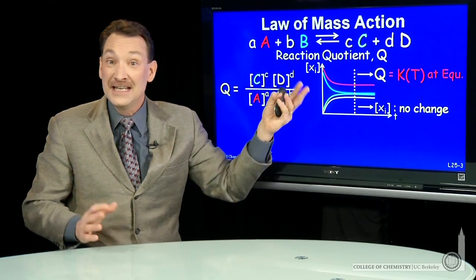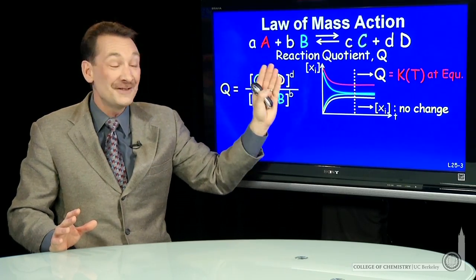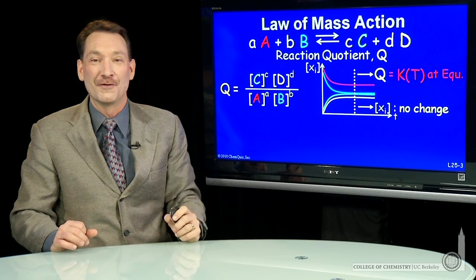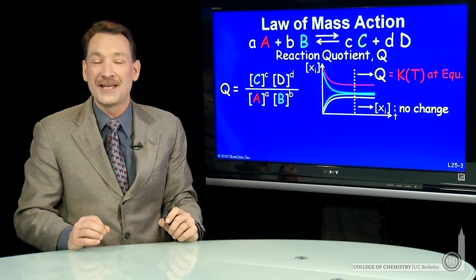You start with C and D high, the reaction goes in reverse. And interestingly, the same value of K is achieved over time. So it's indeed a constant. And it's a characteristic of the chemical reaction.